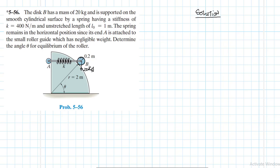We have been asked to find the angle theta when the system is in equilibrium and the whole system will remain horizontal. We have a spring that attaches disk A to disk B and we've also been given the spring constant.